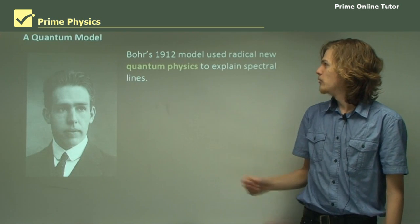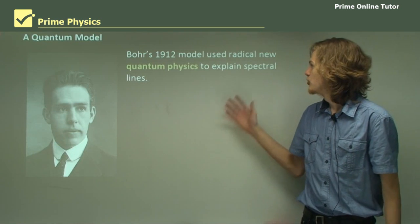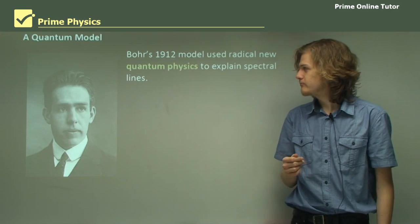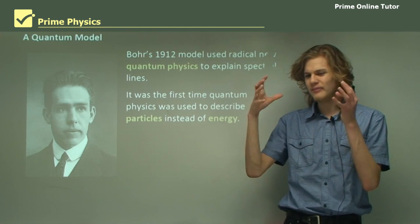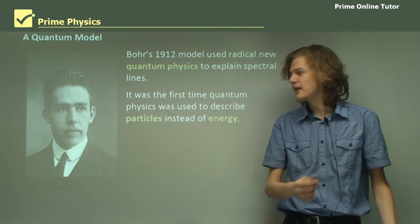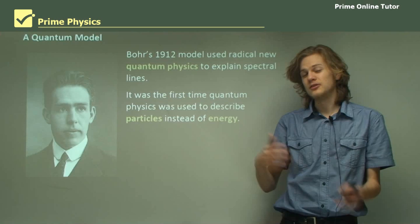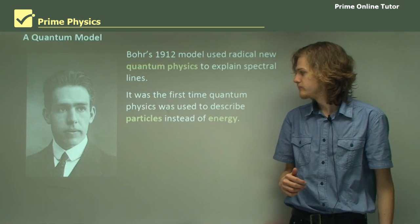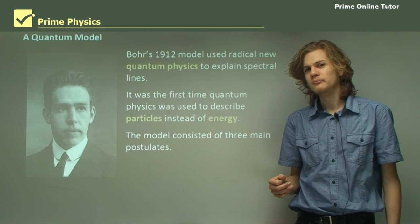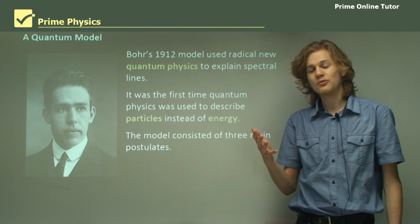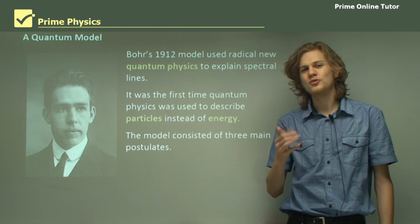So Bohr's 1912 model used a radical new quantum physics, which was still pretty controversial at the time, to explain spectral lines. It was the first time quantum physics was ever used as an actual real application other than explaining blackbody radiation. In fact, the first time it was used to describe particles like electrons instead of just packets of energy. The model consisted of three main postulates, all of which were pretty crazy at the time, but all worked really well together to explain the spectrum of hydrogen.